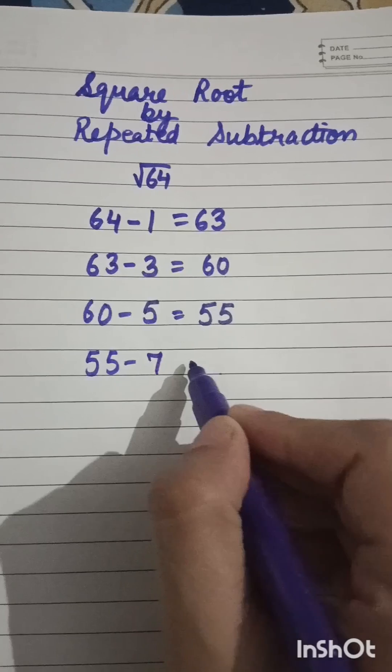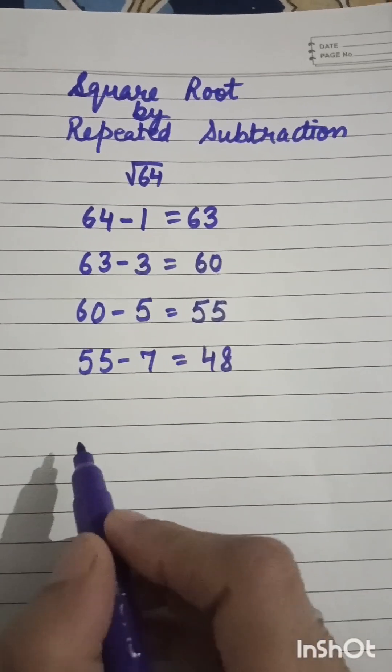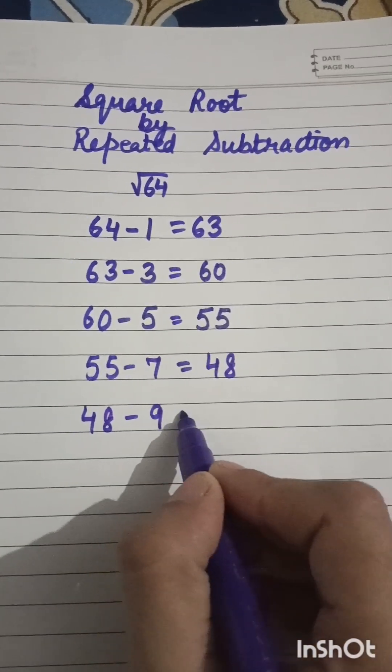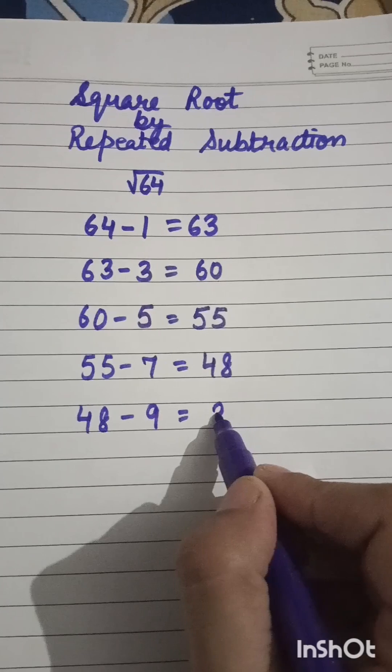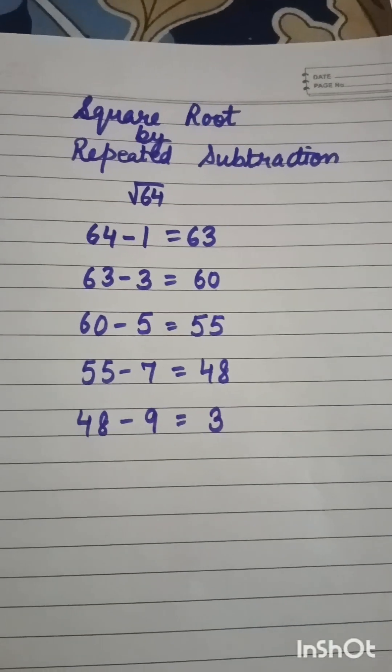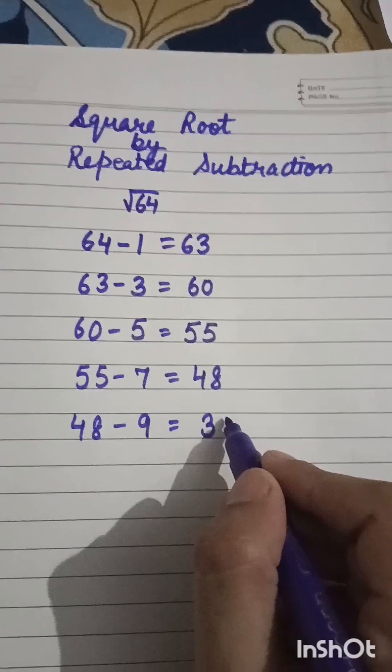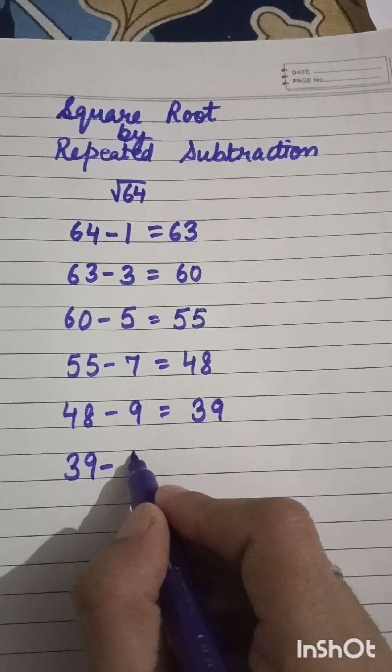After that, 48 minus the next odd number, we will take 9. So what will be the answer when we take 48 minus 9? Yes, 39. Next is 39 minus 11, answer will be 28.